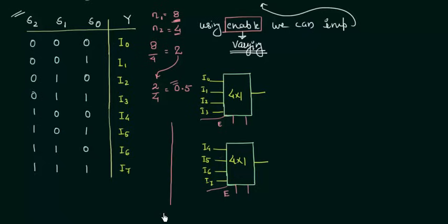give a signal or an input S2, and this will be complemented and given to E, the enable of this one, and it is given to the enable of this one in uncomplemented form.